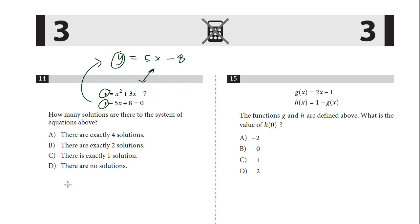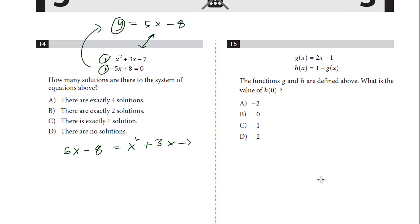So I'm going to just copy it down here. We get 5x minus 8 equals x squared plus 3x minus 7. Just going to scroll down here a little bit.